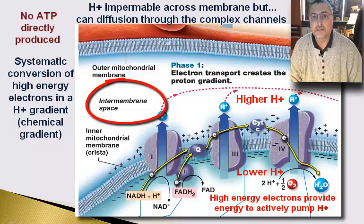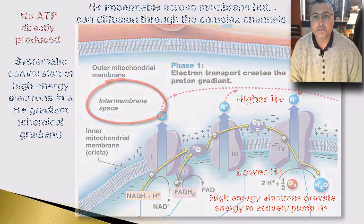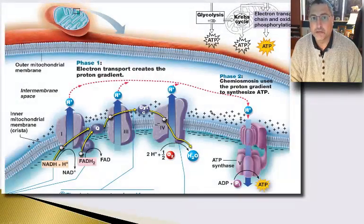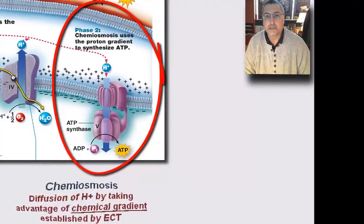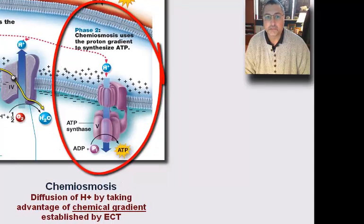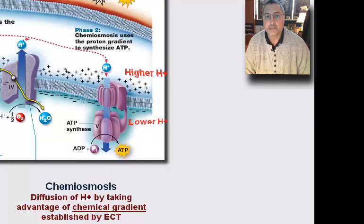We're going to move hydrogen ions against the gradient, push them into the inner membranal space, setting up the potential to do work. And here is where we do the work — in a process known as chemiosmosis, in which we systematically move those hydrogen ions from the inner membranal space back into the matrix. Let's think about that set of reactions as being oxidative phosphorylation.